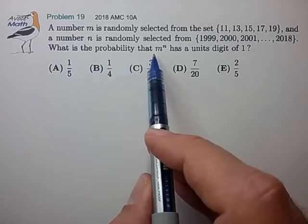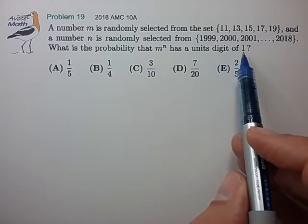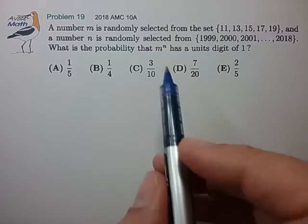What is the probability that M to the nth power has a units digit of 1? Oh boy. Okay, it looks like we're probably gonna have to make a table to try to sort out how some of these multiplications work.